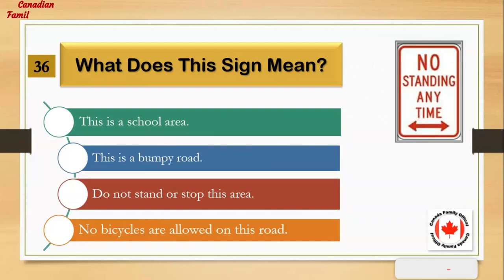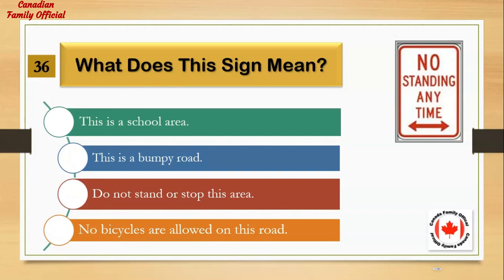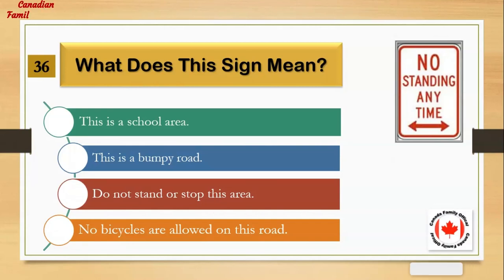What does this sign mean? Number 1: this is a school area. Number 2: this is a bumpy road. Number 3: do not stand or stop in this area. Number 4: no bicycles are allowed on this road. And the answer is: do not stand or stop in this area.